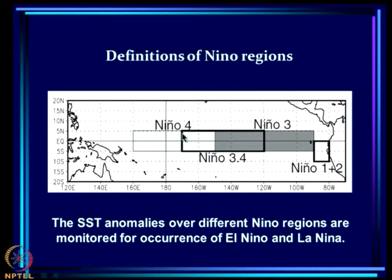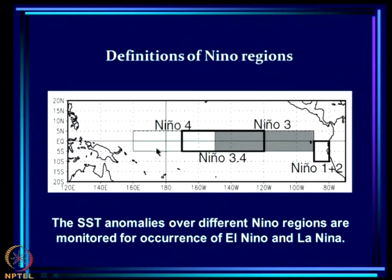Niño 3.4 is in between, covering part of the east Pacific and part of the central Pacific, starting east of the dateline. It starts at 170°W and goes up to 120°W. All three regions — Niño 3, 3.4, and 4 — span from 5°S to 5°N. SST anomalies over these regions are used as indices for the occurrence of El Niño and La Niña.